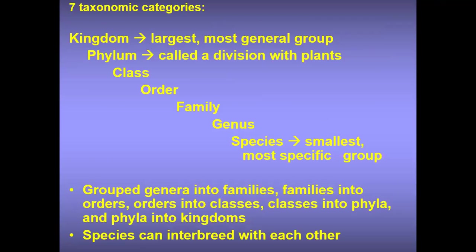There are seven taxonomic categories: kingdom, which is the largest and most general group; phylum, called a division with plants; class; order; family; genus; and species, which is the smallest and most specific group. You need to remember them in order: kingdom, phylum, class, order, family, genus, species. This is a typical exam question, so please take note.